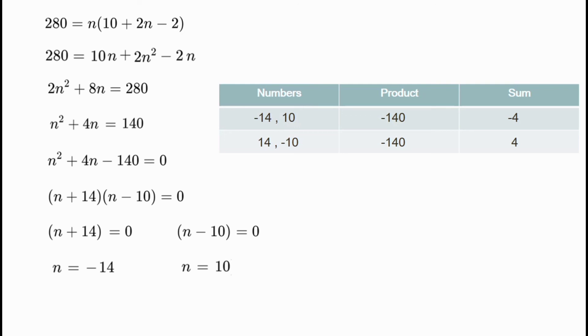The correct answer is n equals 10. The arithmetic sequence 5, 7, 9 must be added 10 times to get a sum of 140.